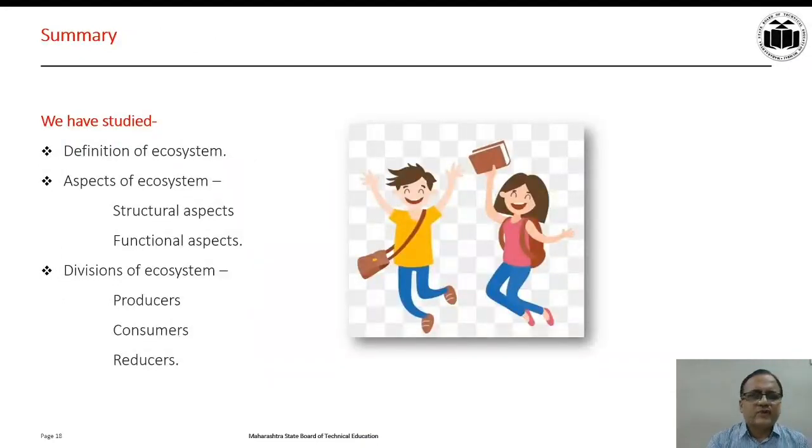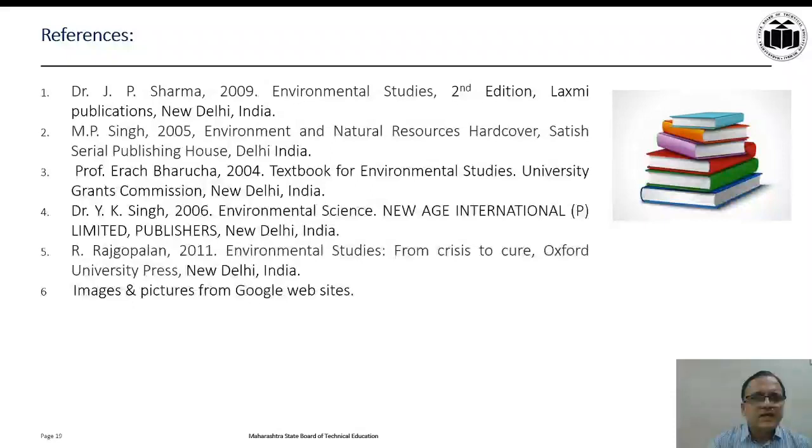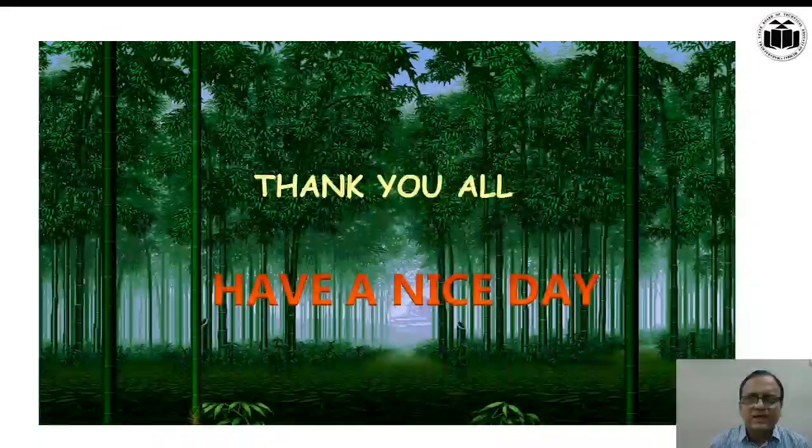So, after the end of this discussion, we have studied the definition of ecosystem, the aspects of ecosystem as structural aspects and functional aspects. And towards the end, we have studied the divisions of ecosystem as producers, consumers, and reducers. These are few references of standard books which you can refer for your further studies. Thank you all. Have a nice day.